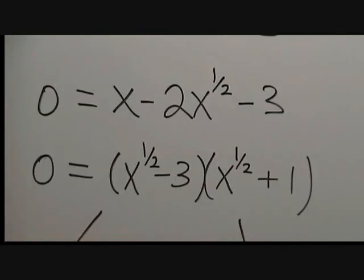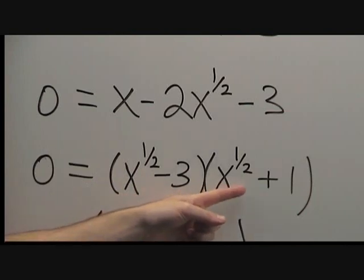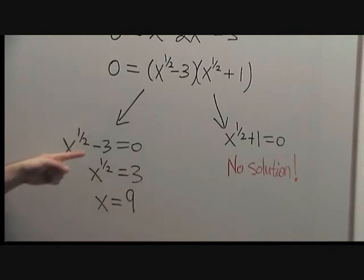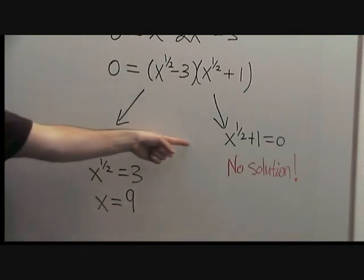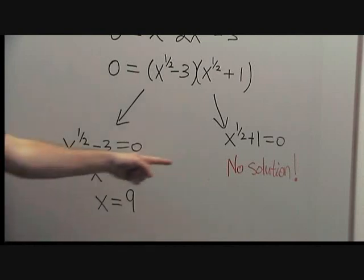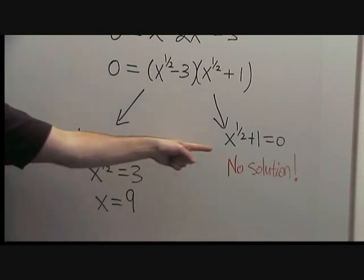To solve this, we can actually factor this expression. It factors to (x^(1/2) - 3) times (x^(1/2) + 1). Solving this equation equals 0 means either the first term is 0 or the second term is 0. The first term gives x = 9, and the second term gives no solution.